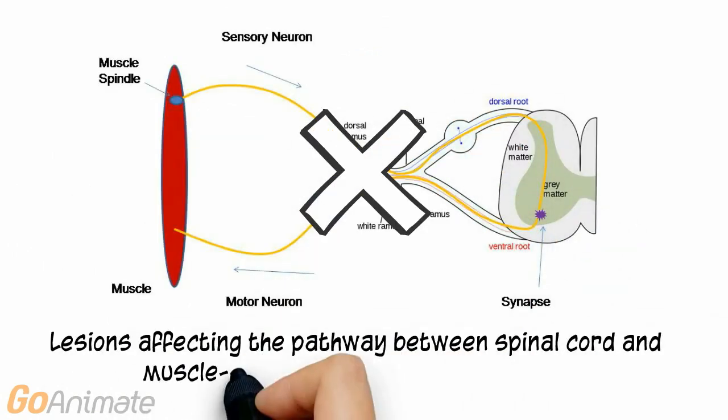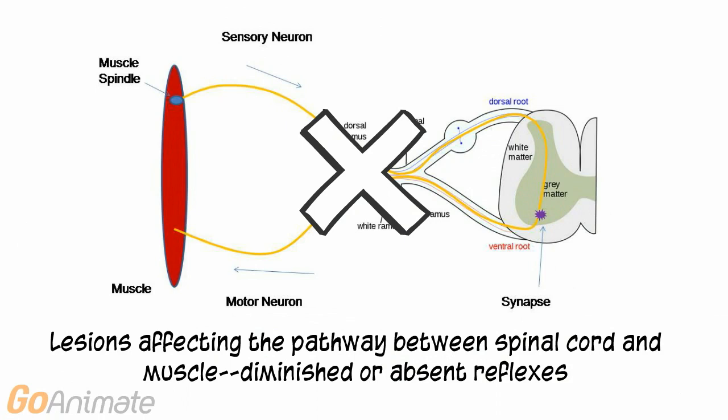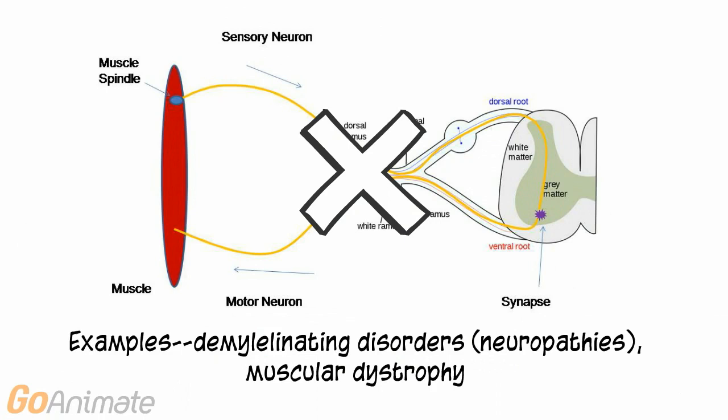Lesions affecting the pathway between the spinal cord and muscle result in diminished or absent reflexes. Examples include demyelinating disorders or neuropathies such as diabetic neuropathy, herniated discs, and carpal tunnel syndrome. Muscular dystrophy can also result in diminished reflexes.